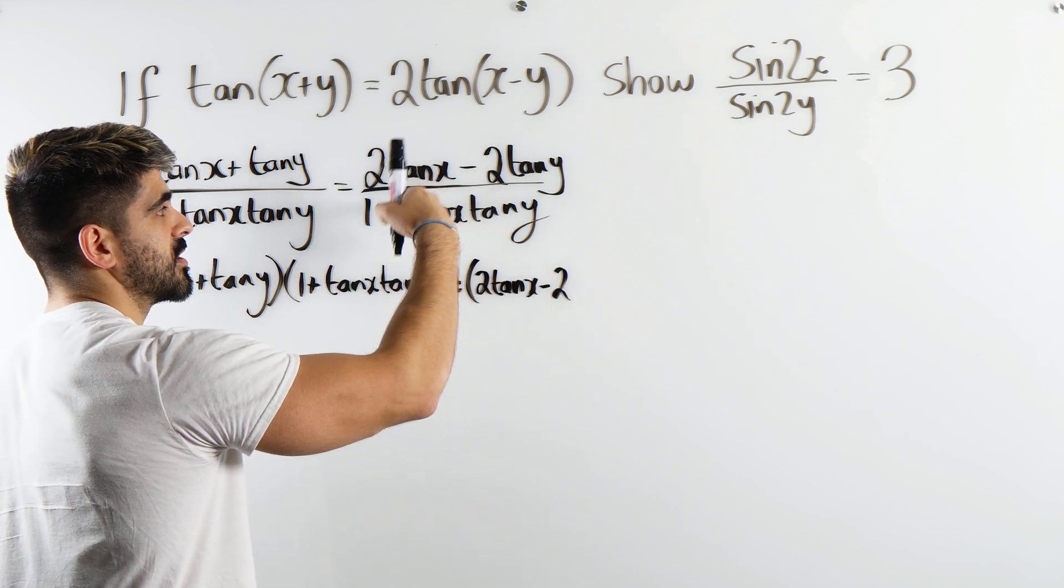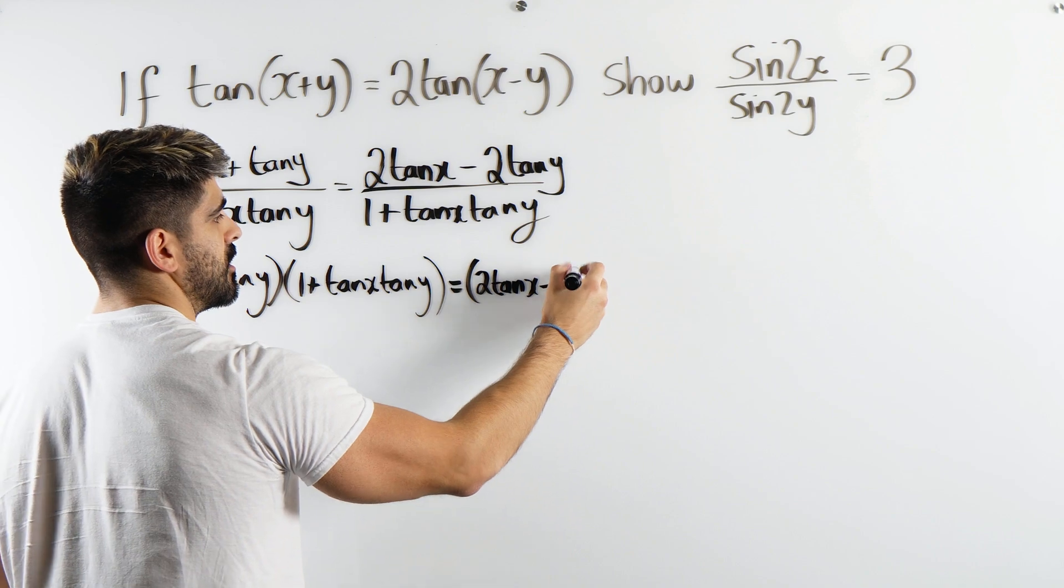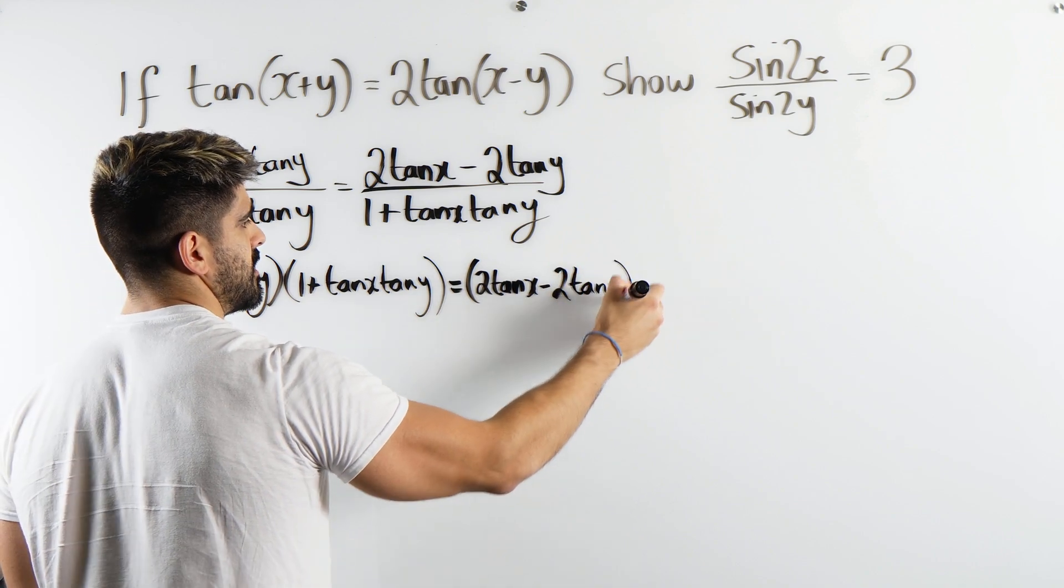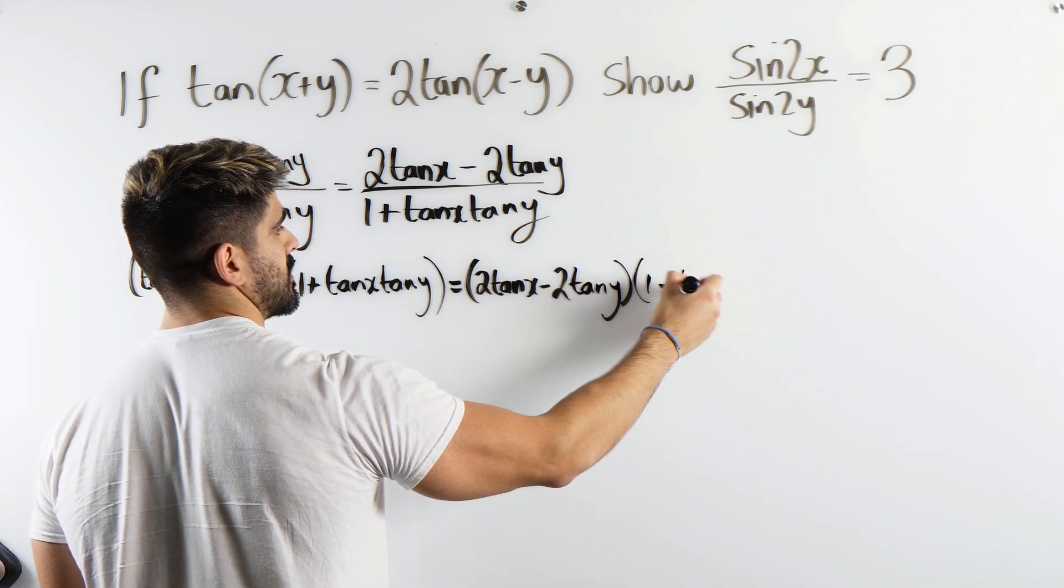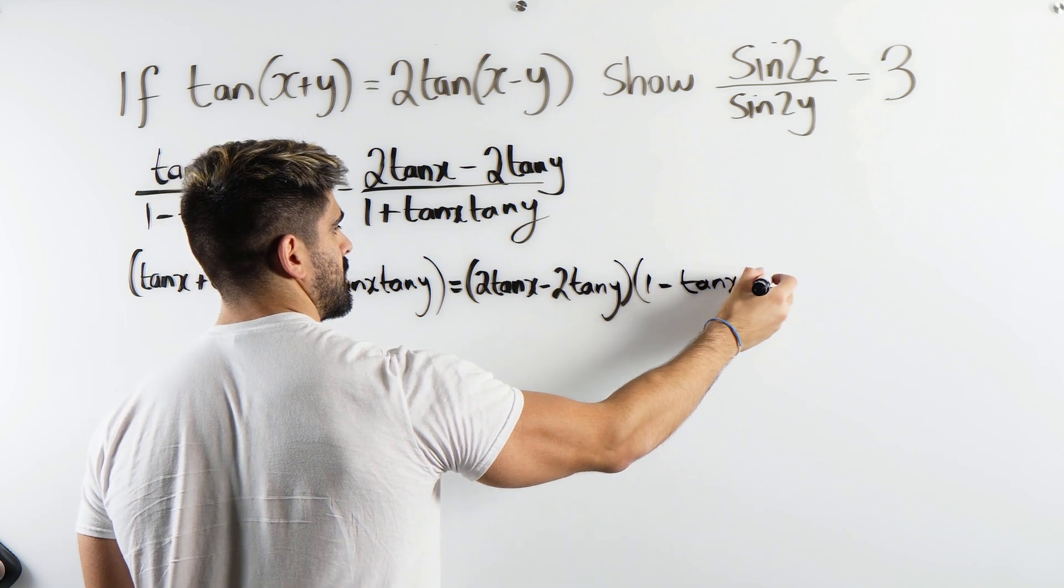Although if you guys would have converted to sine and cos straight away, let me know. It's always cool to see different methods, isn't it? So you've got this by 1 minus tan x tan y.